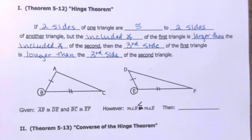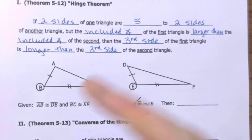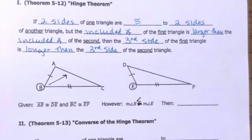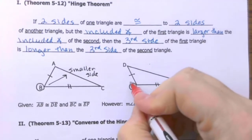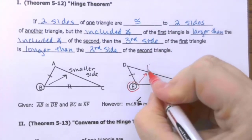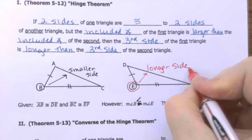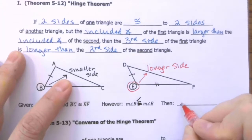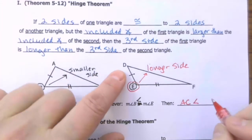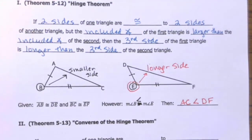If that's the case, then the smaller angle is going to be opposite the smaller side, and the larger angle is going to be opposite the longer side — and we're comparing two triangles here. So if angle B is less than the measure of angle E, then side AC is going to be less than side DF. We don't know exactly how much smaller; we just know that AC has to be smaller. That's your basic hinge theorem.